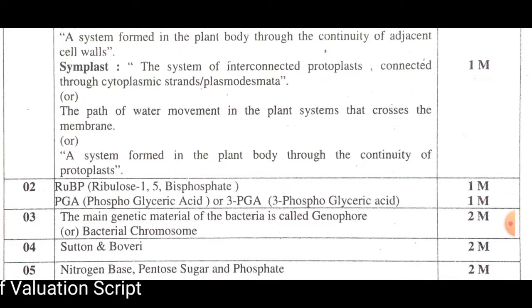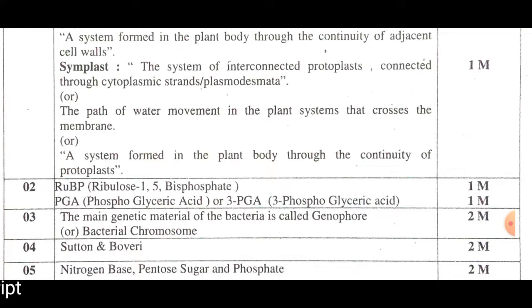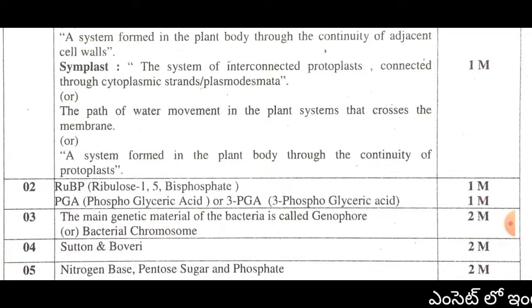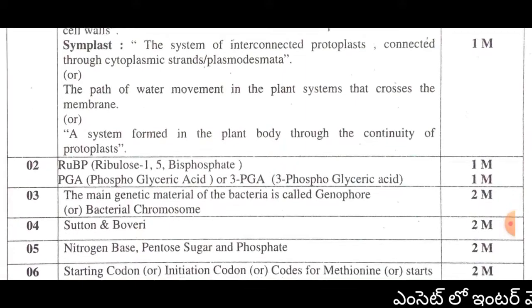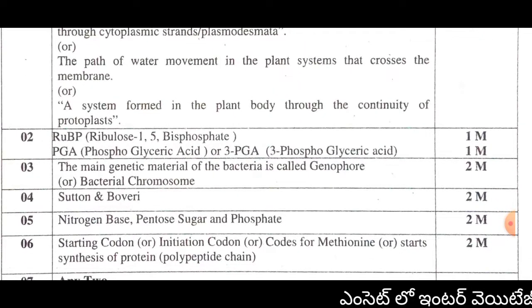The second question: in a C3 plant, the first CO2 acceptor and the first stable compound — this answer gives 2 marks.